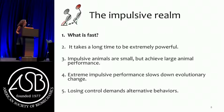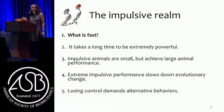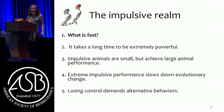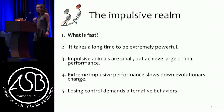I'm going to tell you five little stories about the impulsive realm. I'll start by talking about what is fast. Then in the next four I'll go back and forth between the really good things that happen when impulsive systems evolve, and the kind of bad things — like it takes a long time to be extremely powerful. Impulsive animals are small but achieve large animal performance; extreme impulsive performance slows evolutionary change; and losing control demands alternative behaviors.